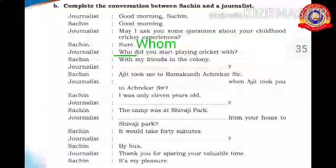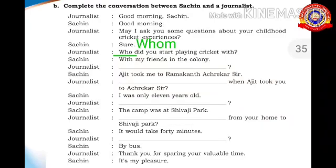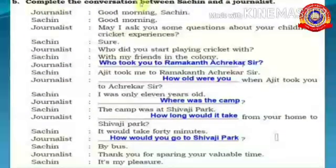Now let's go through the conversation between Sachin and a journalist and fill it with the help of question words. 'May I ask you some questions about your childhood cricket experience?' — starts with 'may', answer is 'Sure' — a yes/no question. 'Whom did you start playing cricket with?' — 'With my friends in the colony.' Note: the textbook has a mistake — it should be 'whom', not 'who.' Next answer: 'Ajit took me to Ramakant Achrekar sir' — so the question is 'Who took you to Ramakant Achrekar sir?'